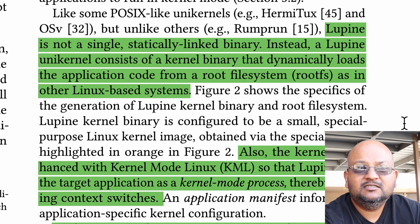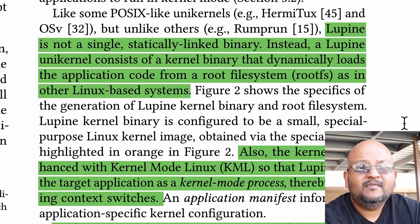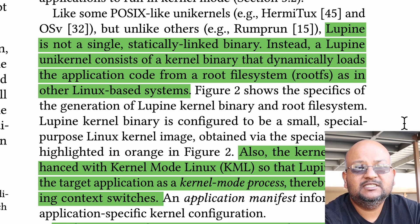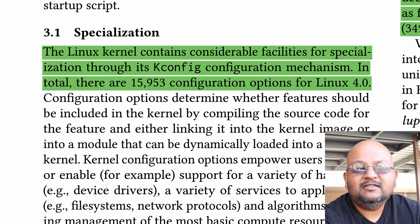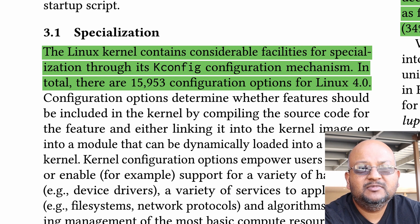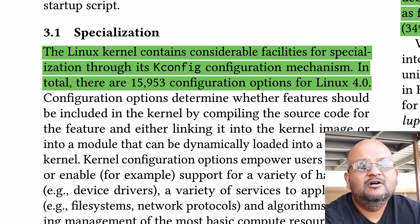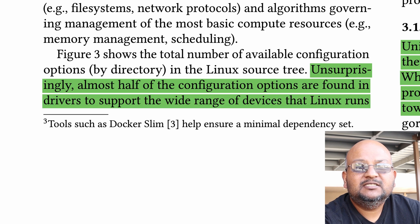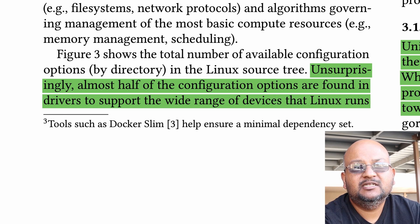The first technique is to specialize the Linux kernel so that you cut away all the parts of functionality that your application doesn't need. The second technique is to eliminate system call overhead by simply running the entire application in kernel mode itself. This totally does away with the context switching between user mode and kernel mode when doing system calls. The way they specialize the kernel is by leveraging the kernel's existing config mechanism. The Linux kernel has about 16,000 configuration options which control all manner of its functionality.